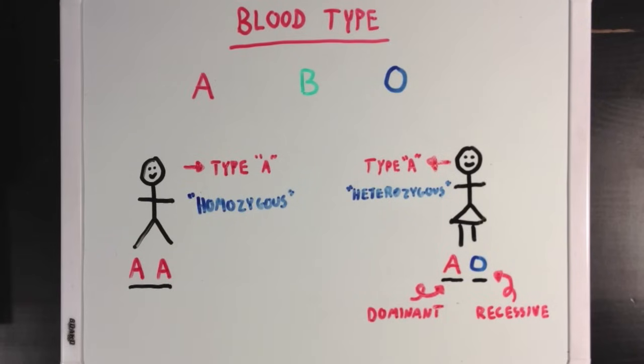Now I want to introduce two more terms. We can describe a person's genes in two different ways. We can look at the person's individual alleles, and we call this the genotype. So for this guy, his genotype is AA, referring to his two alleles, which both code for blood type A.